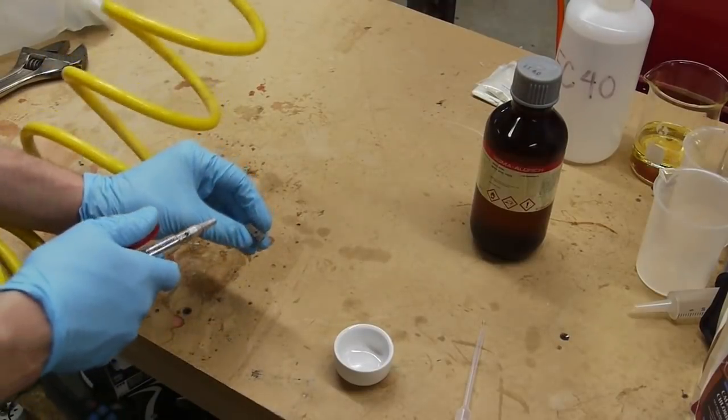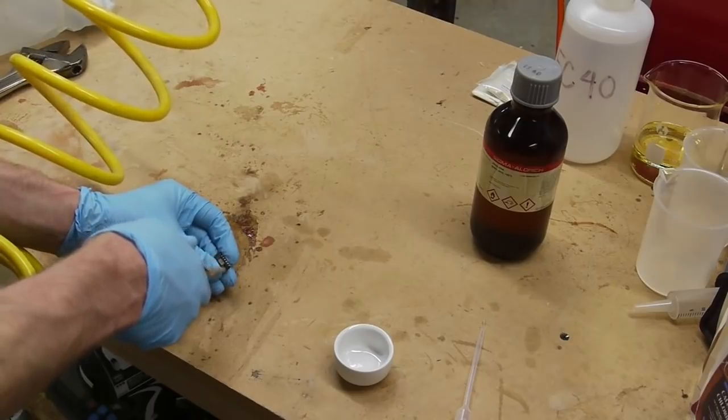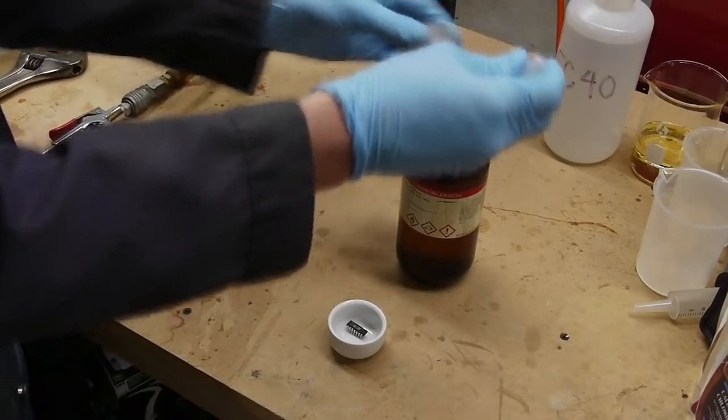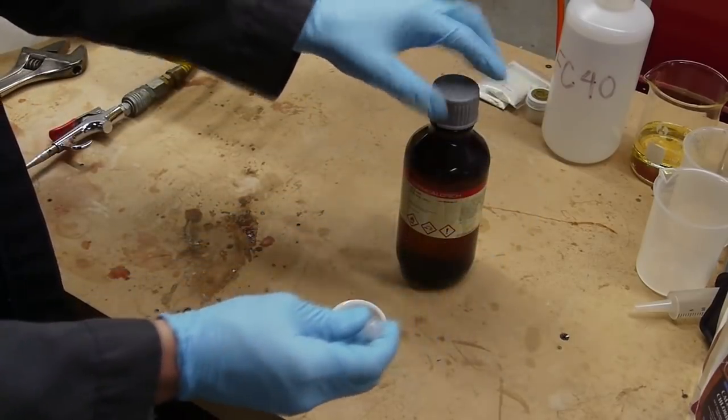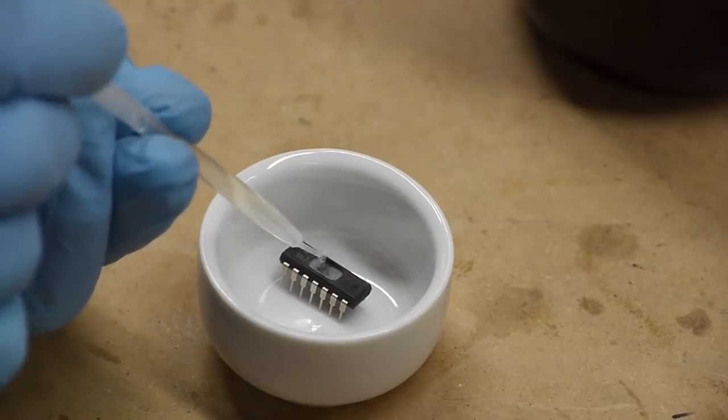So after I had the pocket milled, I blew the dust out and then initially I tried to etch the package away at room temperature. So I put a drop or two of fuming nitric acid into the milled pocket and waited for a while. But at room temperature, it's either going to take way too long or it's not going to work at all.